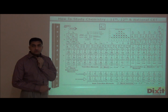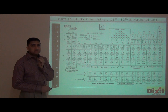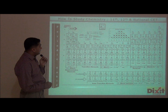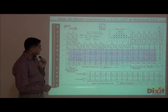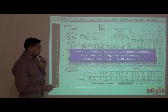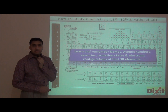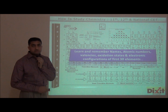Step 8: I suggest all students have a periodic table in your study room. As of today, about 120 elements are known. Step 9: If you try to learn and summarize one element daily, within 3 months you can memorize the whole periodic table. Step 10: Learn and remember names, atomic numbers, valences, oxidation states, and electronic configurations of at least the first 30 elements. We require these 30 elements for solving various multiple choice questions.